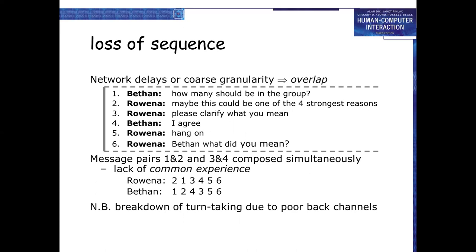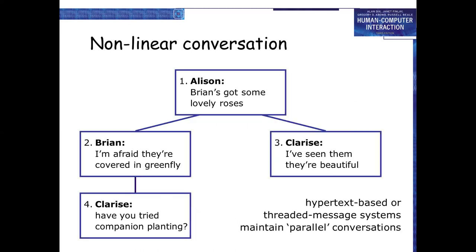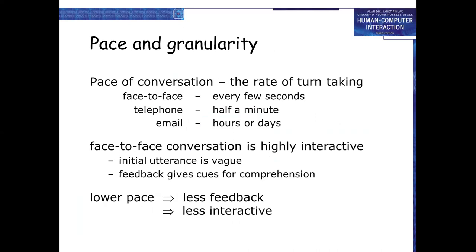Message paths 1, 2, 3, and 4 may be composed simultaneously, causing lack of common experience. Maintaining context: recall that context was essential for disambiguation. Text loses external context, hence indexicals become problematic. Non-linear conversation — with participants such as Allison, Brian, and others — can use hypertext or threaded message systems to maintain parallel conversations.